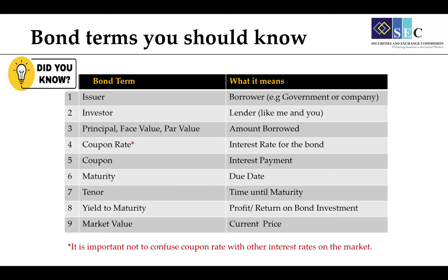To understand bonds better, there are some words that are commonly used which can be a little bit confusing, especially for people who are not aware of them. The first term most commonly used when talking about bonds is the issuer. Think of the issuer as the company or the government that is borrowing money. For example, a government may want to construct a school or a hospital, so to raise that money, one of the ways is by borrowing money through issuing a bond.